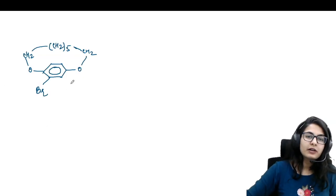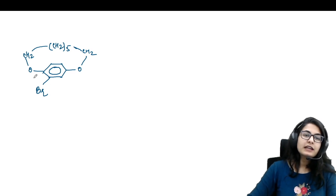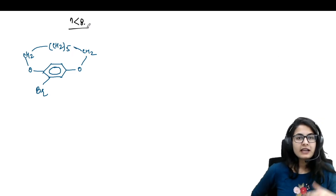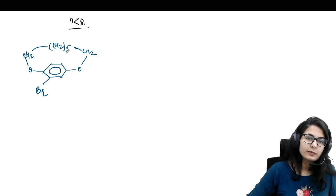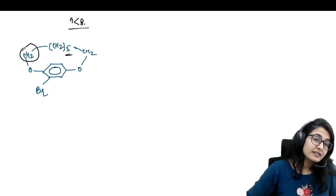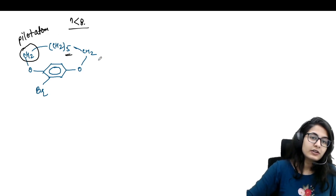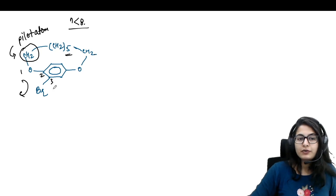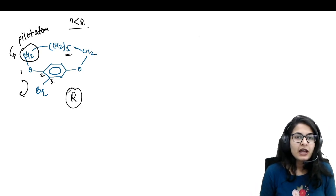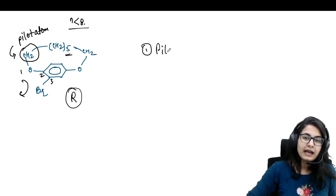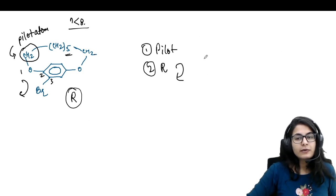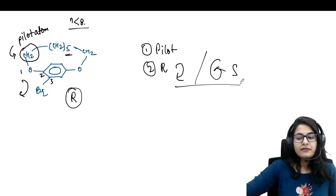Moving on to one more example of the ansa compound: when you have a linear chain connecting two ends of a substituted benzene ring, that is an ansa compound. The n value less than eight is absolutely chiral. Here n is five, so you take the pilot atom on the left-hand side because the substituent is on the left. Start the numbering from the next atom — one, two, three — and you get clockwise rotation, so the molecule is R.